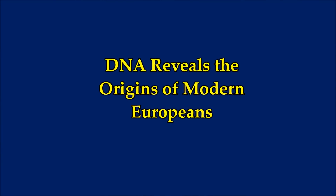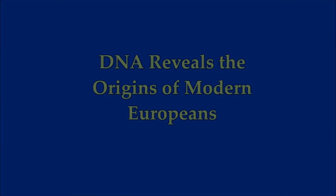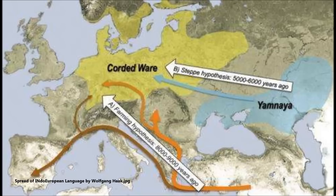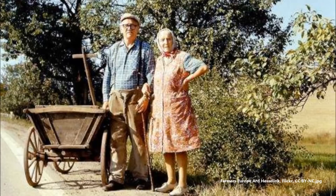DNA reveals the origins of modern Europeans — an article from physics.org featuring a map depicting the two major hypotheses of the spread of Indo-European languages and the geographic distribution of archaeological cultures. Europe is famously dotted with different cultural and language groups clustering in different regions, but how did they all get there and how are they related? One way of answering these questions comes from digging up relics of the past.